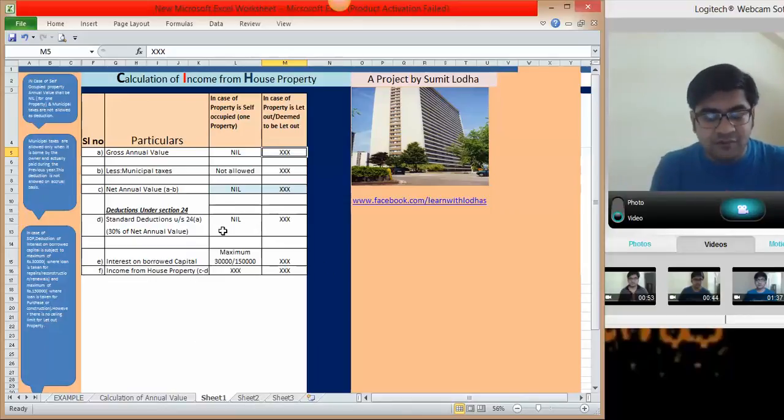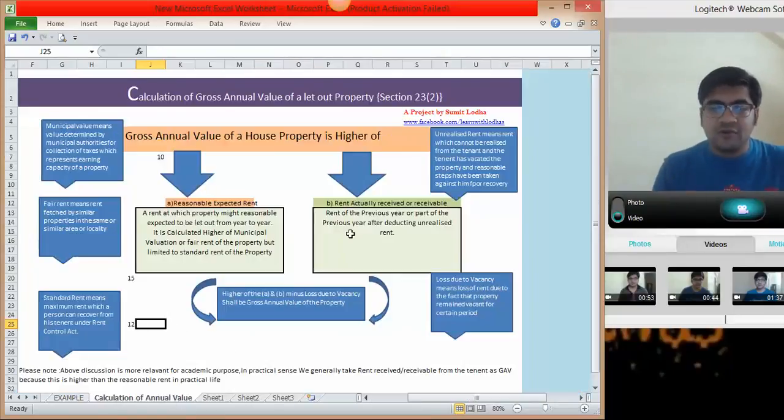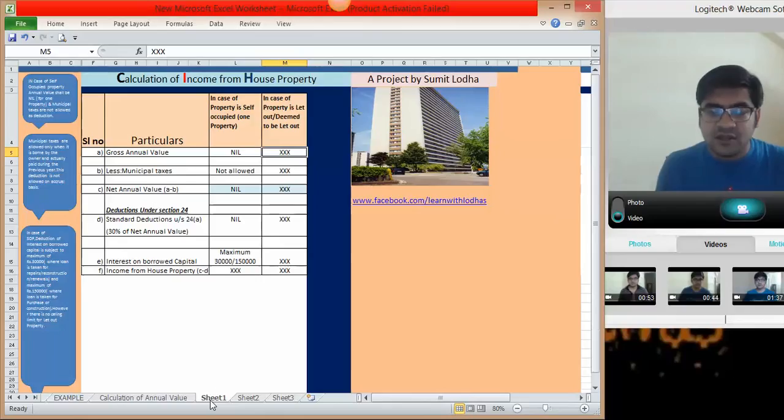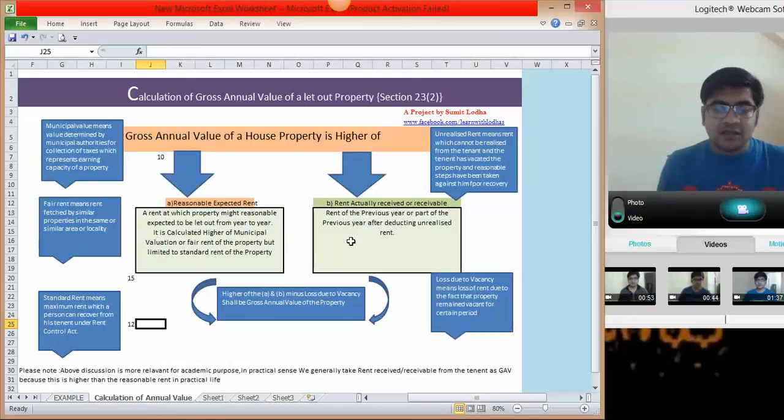Because what happens is in the earlier tutorial we have already covered how to calculate income from house property, but in this tutorial we will cover how to calculate the gross annual value. Once we have arrived this figure, all the other figures are direct figures, there is no calculations at all. So I think this tutorial will make sense for calculation of gross annual value of the house property which has been rented or which is deemed to be let out for the purpose of income tax.